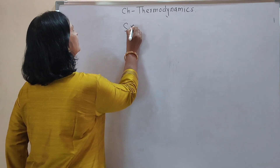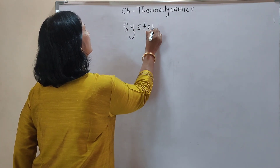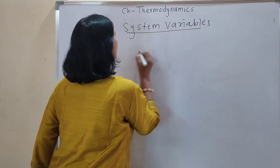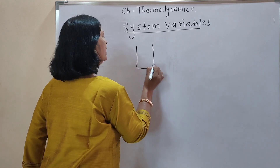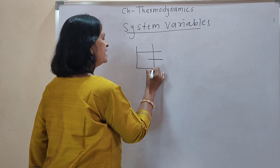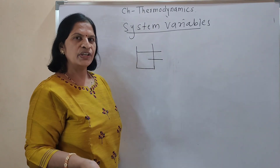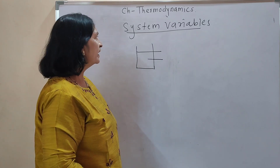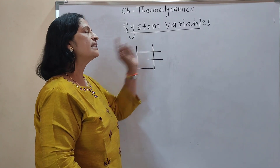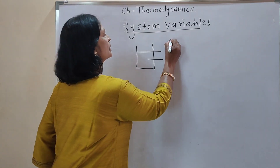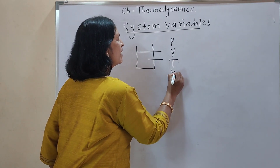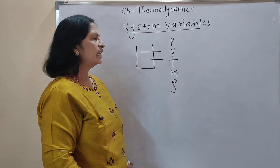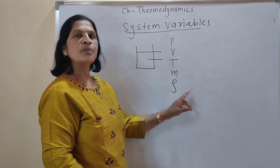What is the system variable? When the temperature of the system gets changed, at that time its pressure, volume, mass, and density also change. Those variables are called system variables: pressure, volume, temperature, mass, and density. These are called system variables and they are macroscopic variables.